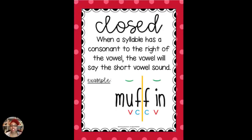Closed syllables are simply when a syllable has a consonant to the right of the vowel. That vowel will make the short vowel sound, and the short vowel sound is the typical sound that we teach the children.